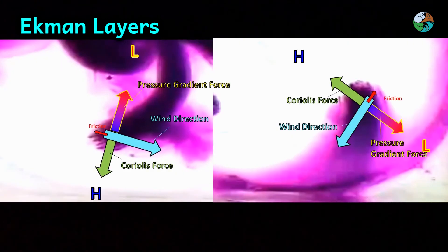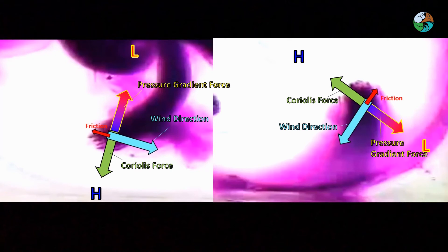However, when we get down to the Ekman layers of the atmosphere, friction becomes more and more important. The drag slows down wind speed. Coriolis force of the air mass is proportional to its speed. So Coriolis force becomes smaller as it slows down.